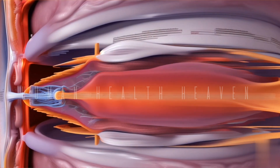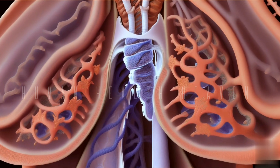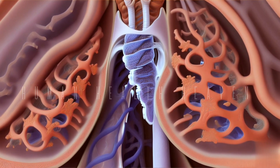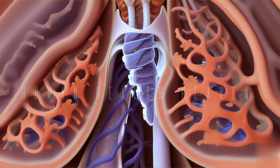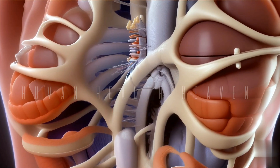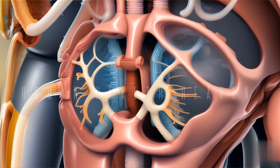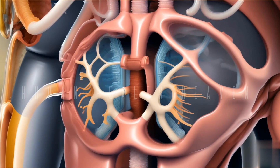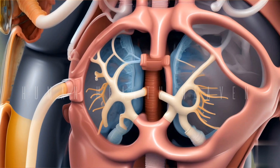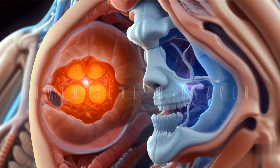Mechanical coupling: the pleura mechanically couples the lungs to the chest wall. During breathing, as the chest wall expands and contracts, the pleura allows the lungs to follow these movements. Prevention of friction: the presence of pleural fluid in the pleural cavity reduces friction between the lung surfaces and the chest wall during respiratory movements. This reduction in friction is essential for smooth breathing.